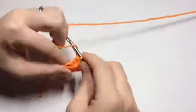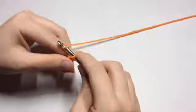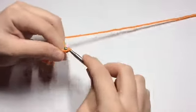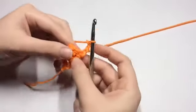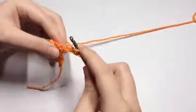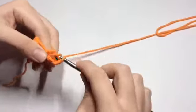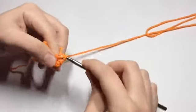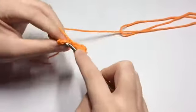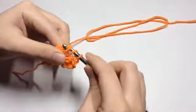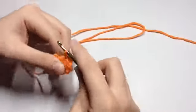And we are going to chain three. Turn the work. Insert a double crochet into the same stitch as the chain three. And then double crochet across like so.